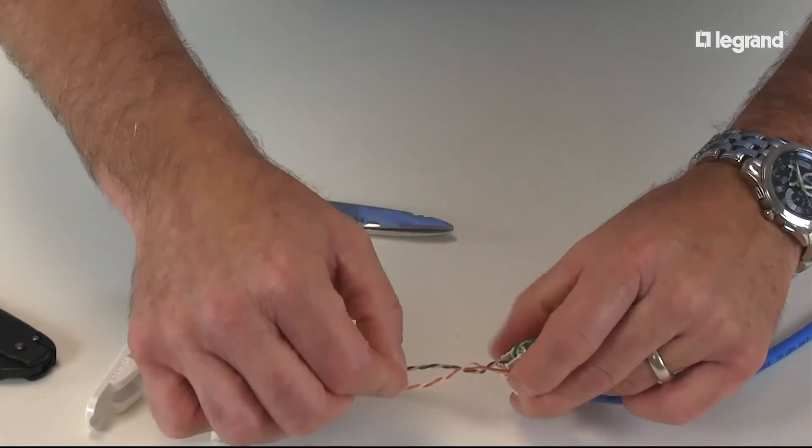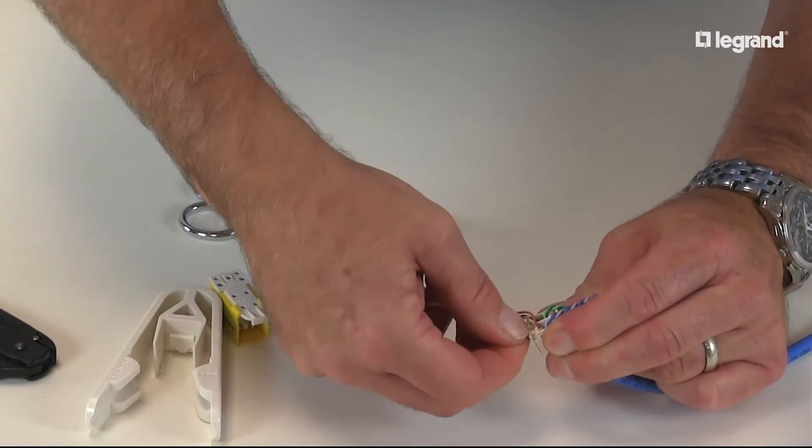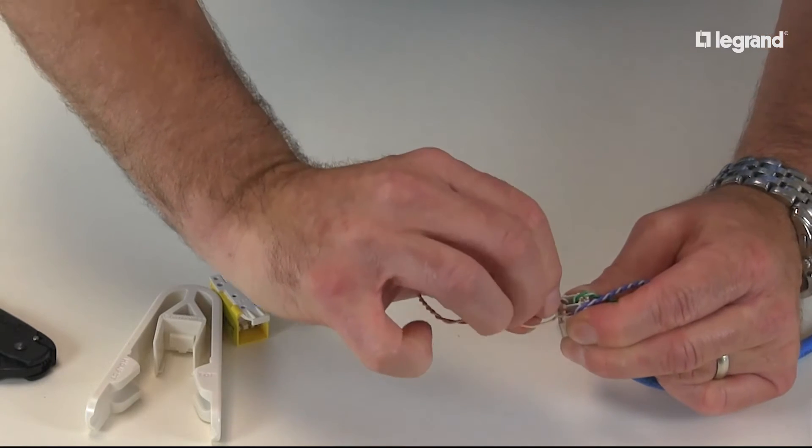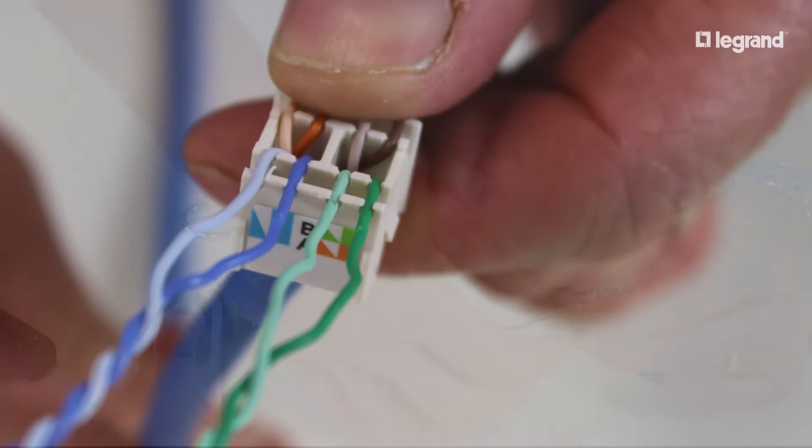Now you can untwist your pairs and set the wires into the appropriate slots. Trim the excess wire as close to flush with the lacing cap as possible. Match the wire color to the sticker on the lacing cap, making sure the solid wire color matches the solid slot and the color white wire matches the color white slot.